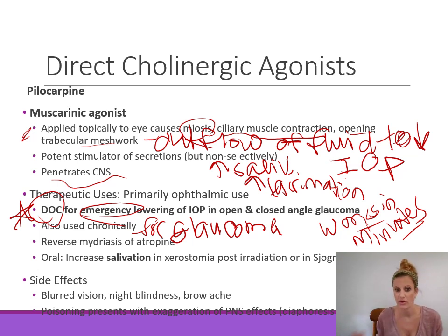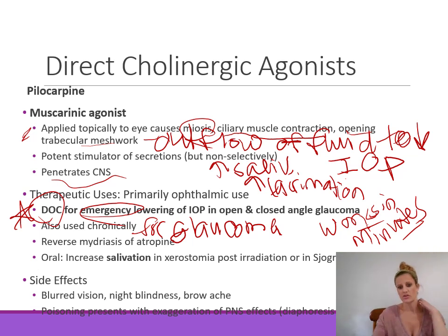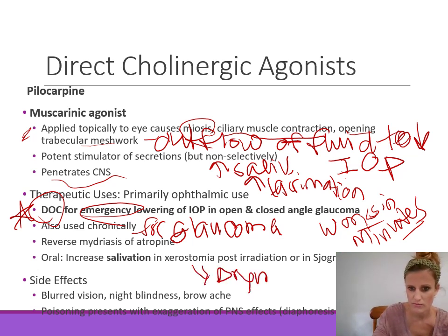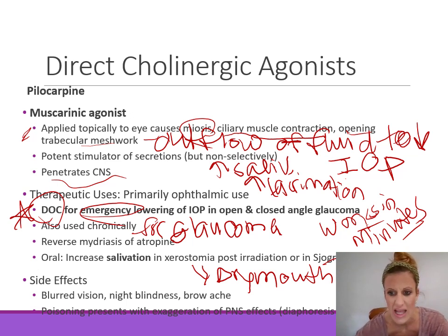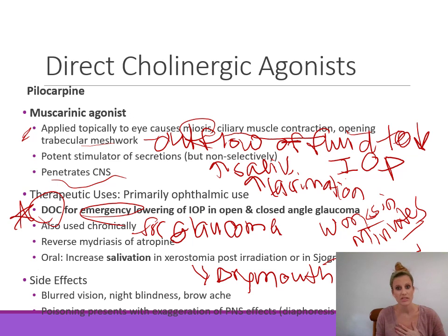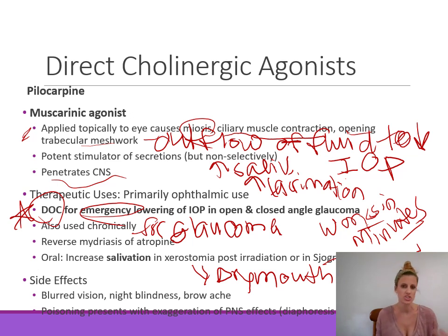Pilocarpine can be given orally to increase salivation in xerostomia. Dry mouth is common post-radiation treatment, so pilocarpine tablets can be given for chronic severe dry mouth. It is also used for Sjögren's syndrome, which has decreased salivation and decreased lacrimation — pilocarpine stimulates both. However, it is not selective for only those areas, so it also increases sweating, GI secretions, and GI motility.